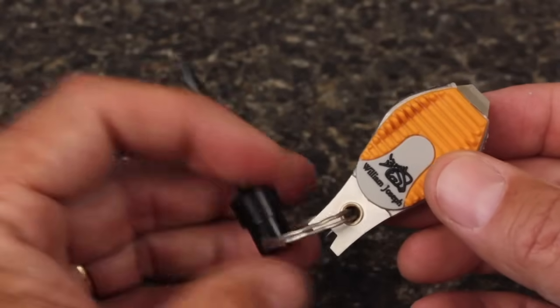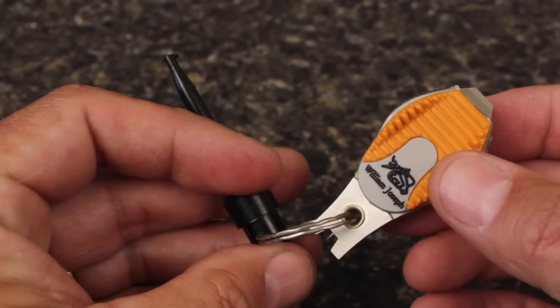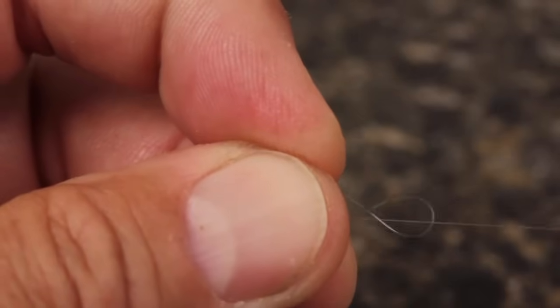I keep my hackle pliers ringed to my nippers at the end of a zinger so everything I need is readily available. The hackle plier trick comes in especially handy with the really small stuff.